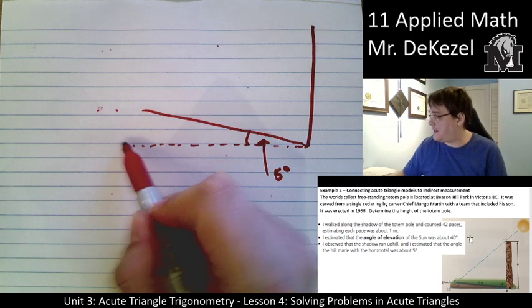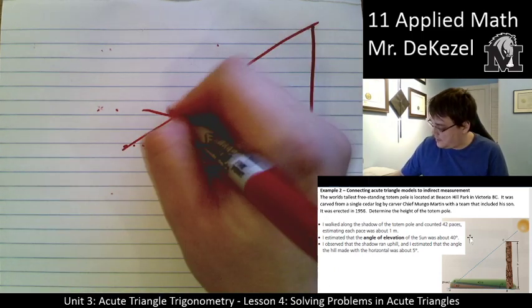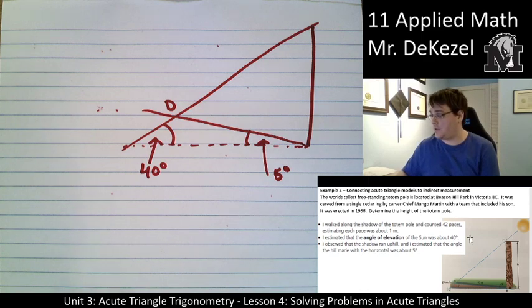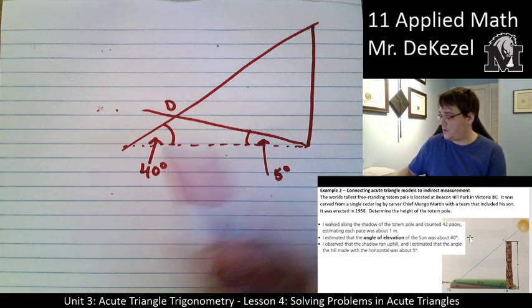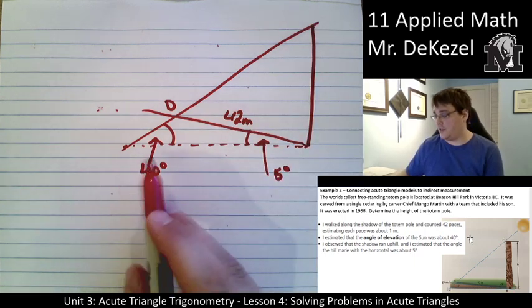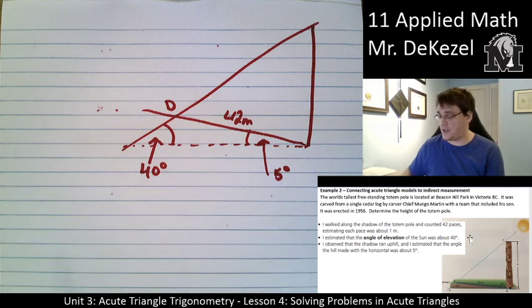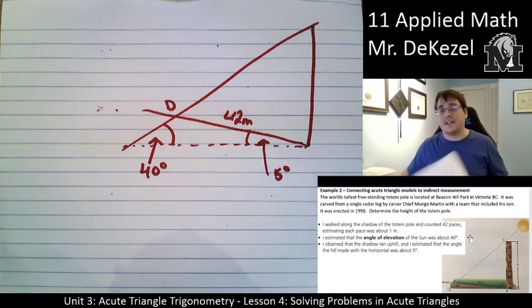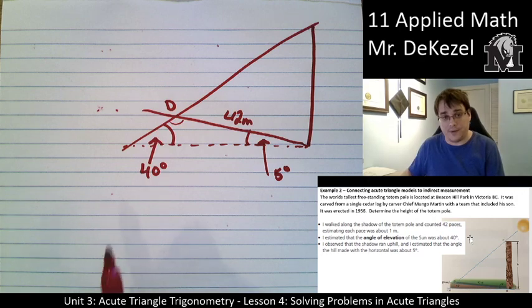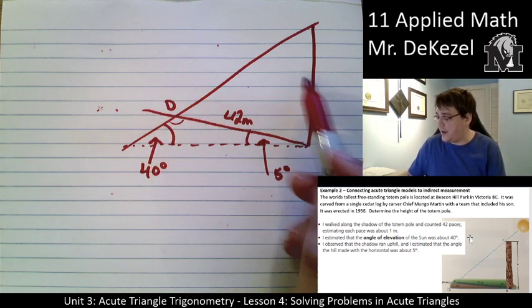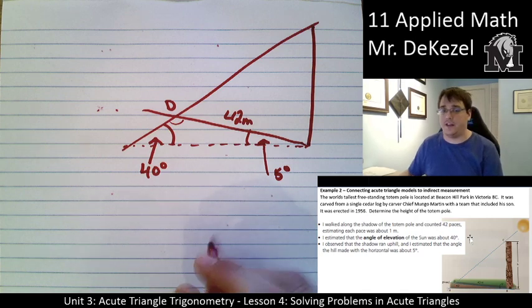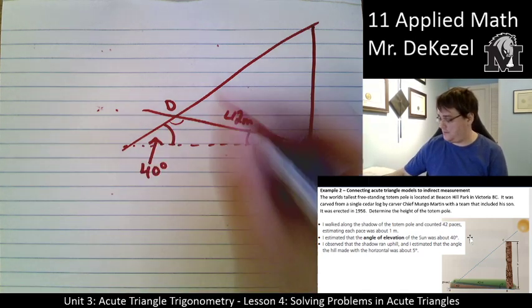We also know that we have a point here, point D, and this angle here is 40 degrees. We paced out from the totem pole 42 meters and we estimated the angle of elevation to the sun to be 40 degrees. So that's where we got this from. This was also an estimate. So the first thing that I can do is find out what this angle is right here. And in doing that, it will help me find out more information about the triangle to eventually determine the height of the totem pole. At this point, I only know one thing about the height of the totem pole triangle. It is not very helpful.